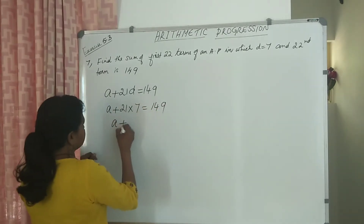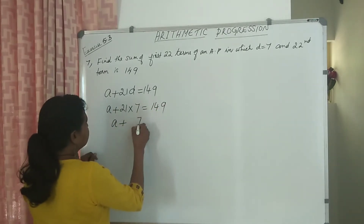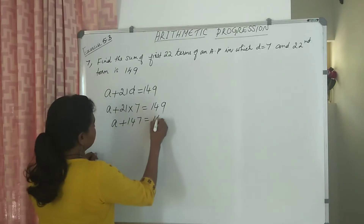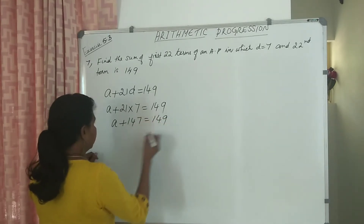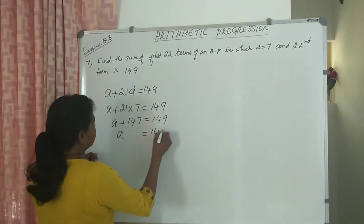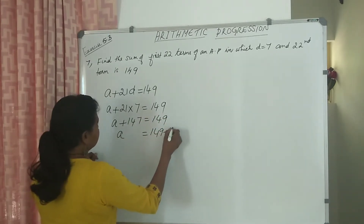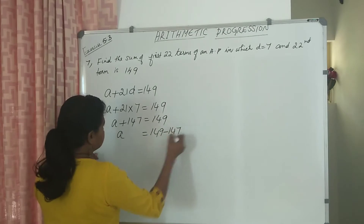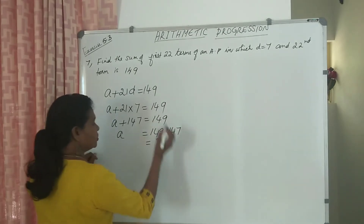So, A plus 147 equal to 149. So A is equal to 149 minus 147, that is equal to 2.